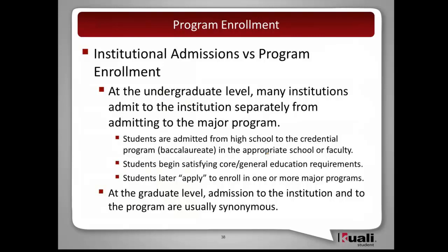There are some differences between admission into the institution and enrollment into a program. At the undergraduate level, many institutions admit to the institution separately from admitting to a major program — students coming from high school into a baccalaureate program in a school or faculty would start off by satisfying core general education requirements before later applying to enroll in one or more of the major programs. At the graduate level, admission into an institution and to a program are usually synonymous — that happens at the same time.